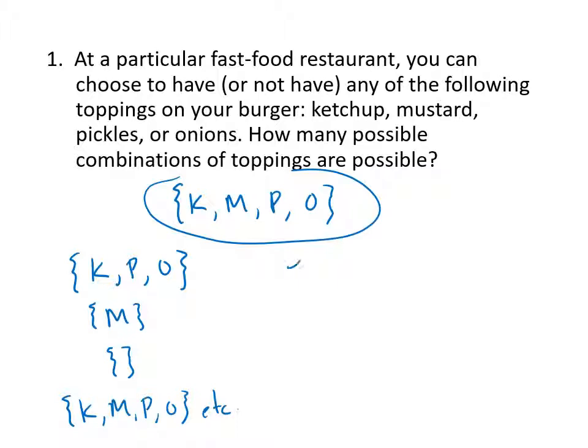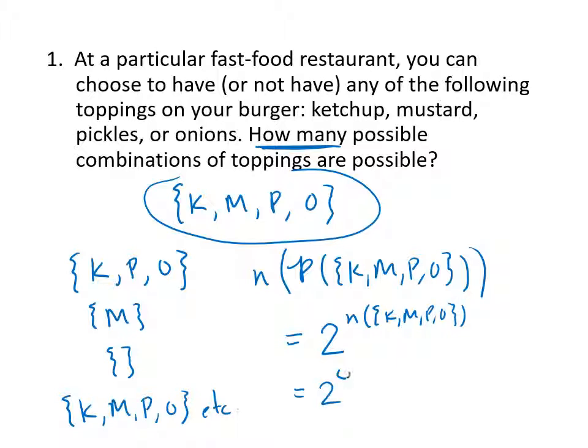In other words, the solutions can be represented as the power set of this set of size four. Since the question is how many possible toppings, what we want to know is how many things are in that set. The size of a power set is two to the power of the size of the set itself. That's of course four, so that's two to the fourth, which would be 16 total possibilities.